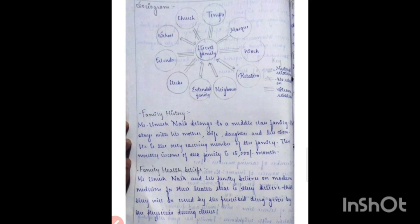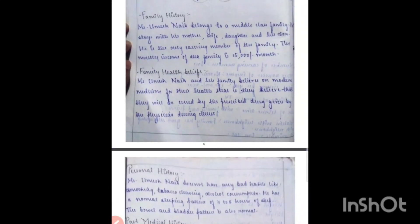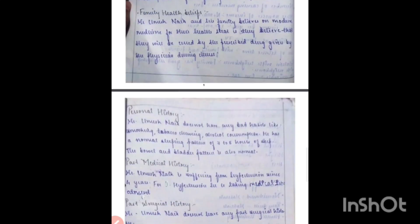Next comes the family history, then the family health beliefs — whether they believe in Ayurveda, allopathy, or homeopathy. Then comes the personal history and the past medical history, where you have to mention whether the person suffered from any disease condition earlier.